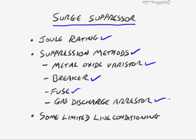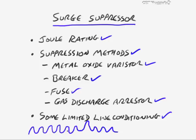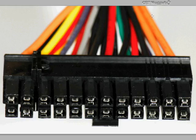There's also a fuse — when it receives a surge of electricity, it melts, and electricity can no longer be conducted through it. Another method is a gas discharge arrestor: an inert gas acts as a non-conductor between the two lines in the surge suppressor. If electrical power exceeds a certain threshold, it ionizes that gas, making it a conductor that diverts electricity away from the normal flow and into ground. Some surge suppressors also provide line conditioning, which smooths out minor fluctuations — what's sometimes called dirty power — giving you cleaner, more reliable power.